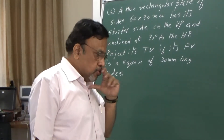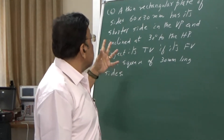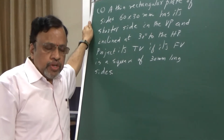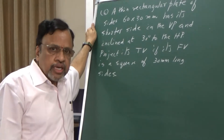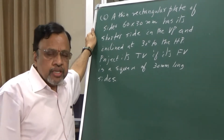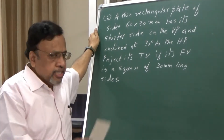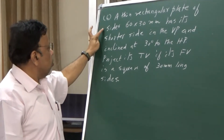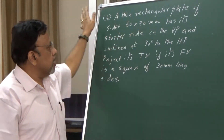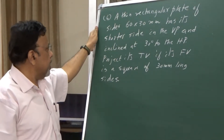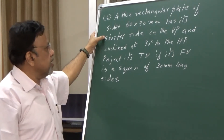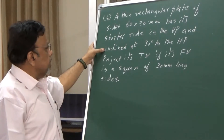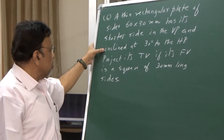Good morning. Today we will see another variety of problems we generally encounter when doing problems in projections of planes. Let us see this problem: a thin rectangular plate of sides 60 by 30 mm has its shorter side in the VP and is inclined at 30 degrees to HP.